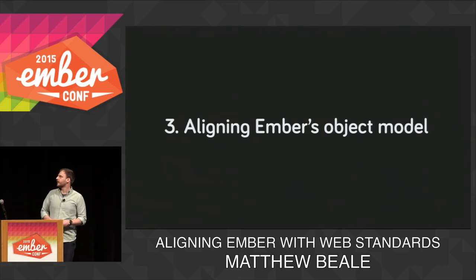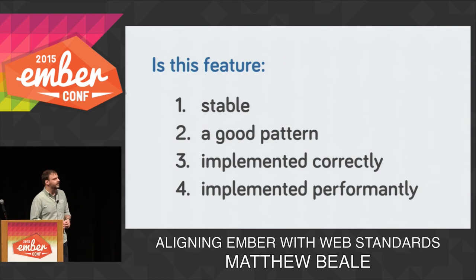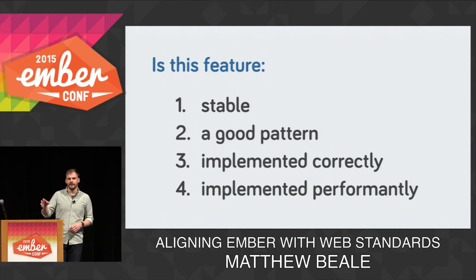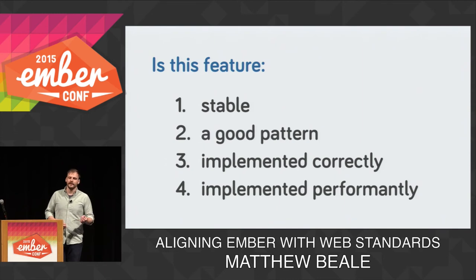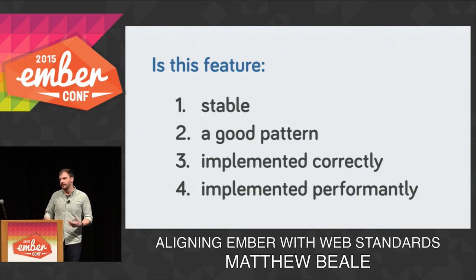The third thing to touch on is Ember's object model. There are some specific APIs as we move things in Ember that go into ES6. We try not to just pick everything that goes into a spec — we have a little bit of criteria. We want to know that it's stable, that the spec isn't going to churn. We want to know it's actually a good pattern. A good example might be object.observe, which originally looked like it was going to solve all our problems, but the more people worked on it, the more we realized it's not the most ideal pattern. We also want to make sure things are implemented correctly and performantly — weak map is a great new feature in ES6 but was very slow in some browsers.